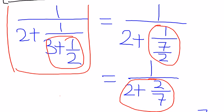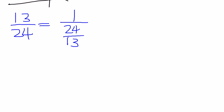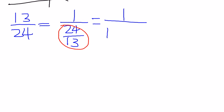Let's try an example first. Let's start with the fraction 13 over 24. The first step is that you need to flip the fraction, which means you write it down as 1 as the numerator. So the denominator becomes the flipped form of the original fraction — 1 over 24 over 13. From here, you need to keep focusing on the fraction on the bottom. This number is bigger than 1, so you need to take out the integral part. The integral part is 1, so you get 1 plus 11 over 13.